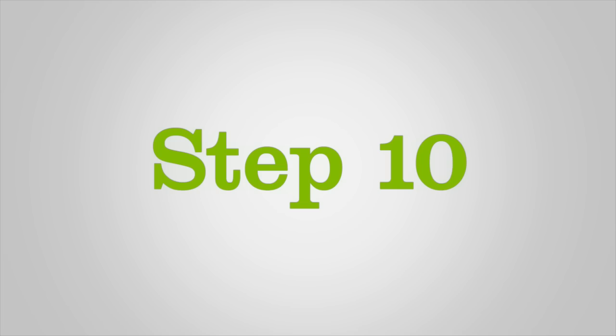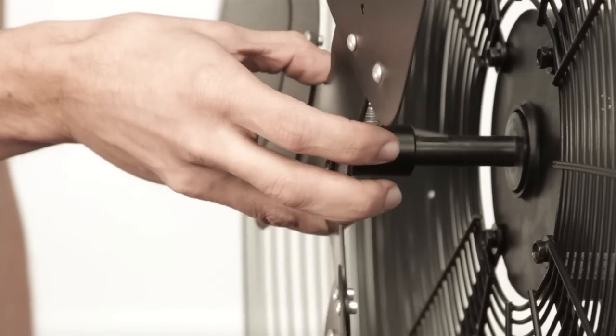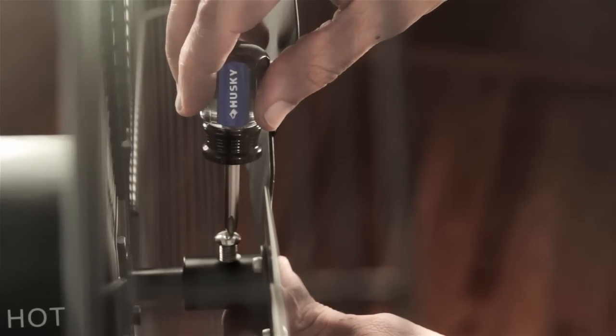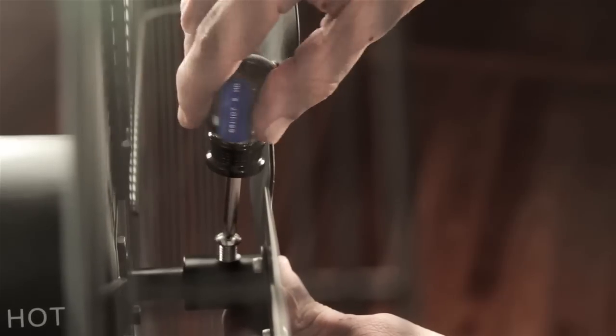Step 10. Mount the Brisa fan blade to the fan motor shaft. Make sure the fan blade set screw aligns with the flat section of the motor shaft.